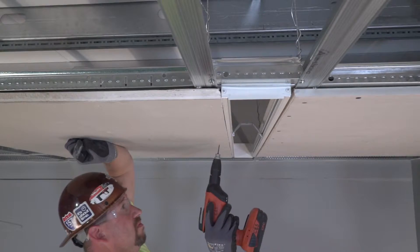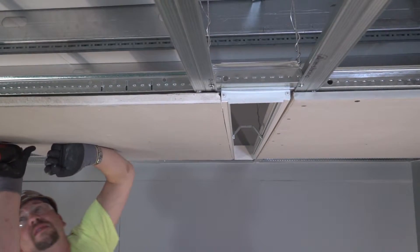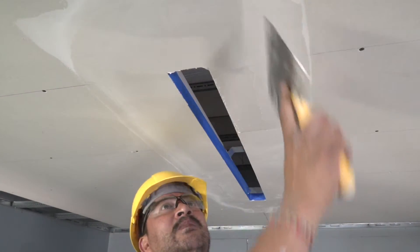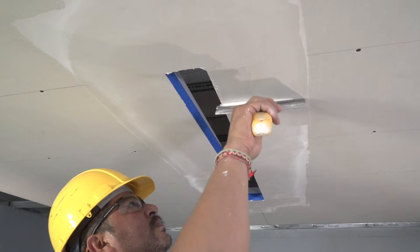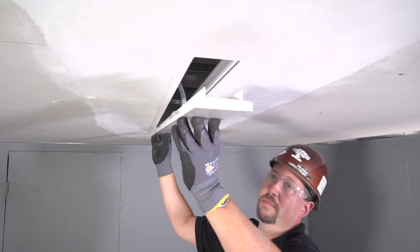Then, 5/8 inch drywall is installed, followed by mud, sanding, and paint. What's left is a clean drywall opening, free of visible flanges.